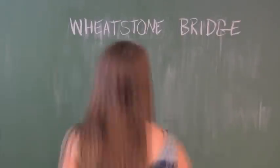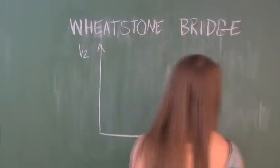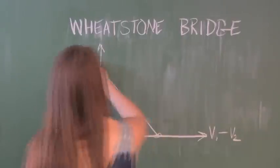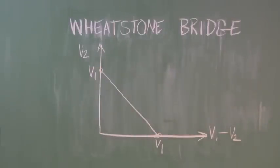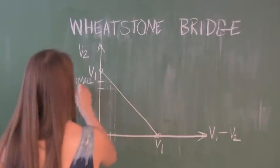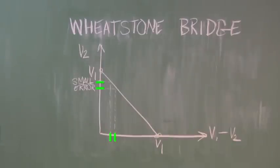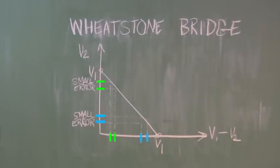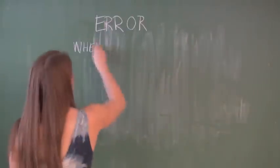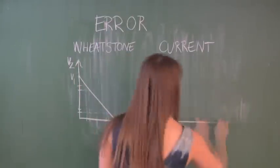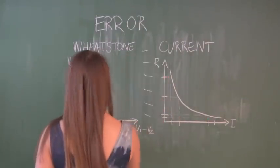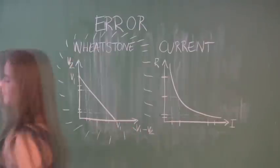Now we can see what the Wheatstone bridge gets us. If we plot the voltage we'll measure as a function of the actual voltage, we get a linear relationship. If we measure a small difference, we'll create only a small error. If we measure a large difference, we still create only a small error. Compare these errors to the ones we were generating with our current measurement earlier. See how much better the Wheatstone bridge is? This improvement is why Wheatstone bridges are used for measuring resistance.